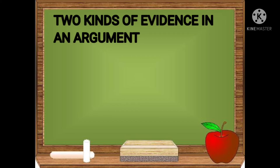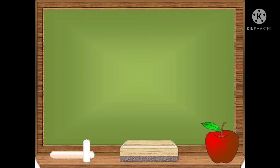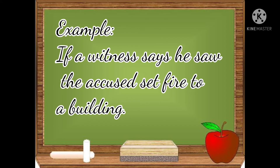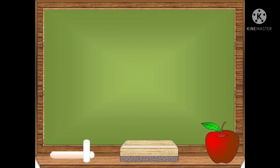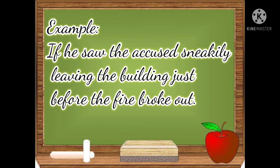There are two kinds of evidence in an argument. The first is direct evidence — this is any piece of evidence that stands alone to prove an argument. For example, if a witness says he saw the accused set fire to a building. The second is indirect or circumstantial evidence — this is a set of facts that when taken together lead to the desired conclusion. For example, if someone saw the accused sneakily leaving the building just before the fire broke out.